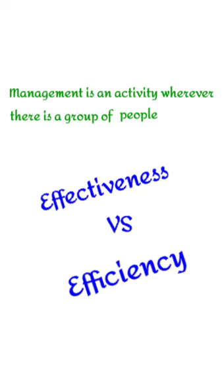To understand the difference between effectiveness and efficiency, consider this example: a manager has a task of producing 5,000 units in a year. Due to power failure, the manager has to operate on a double shift, and was successful in producing those 5,000 units but at a high production cost. In this case, the manager was effective but not efficient, because more inputs were used to gain the same output.